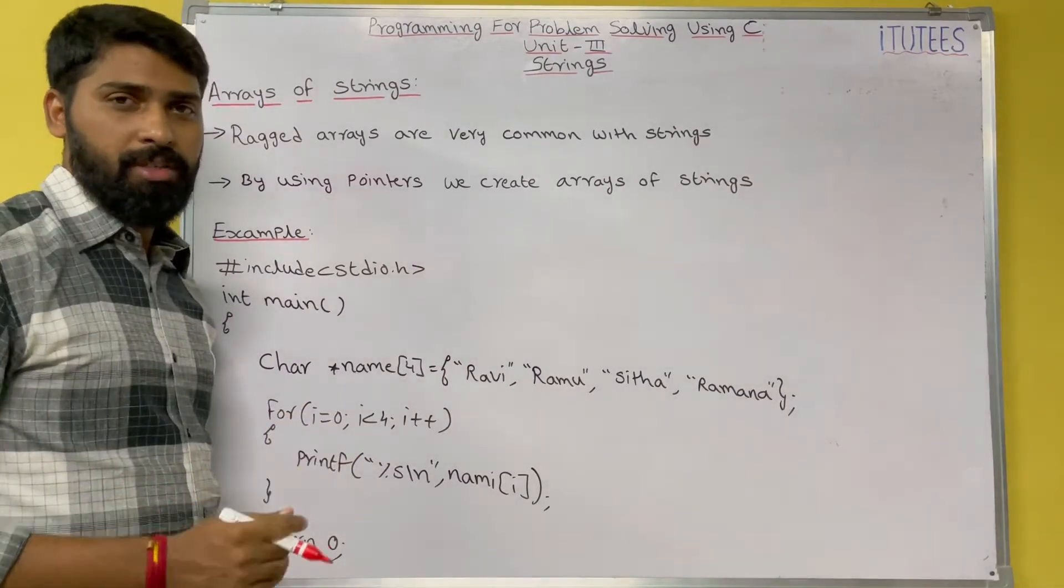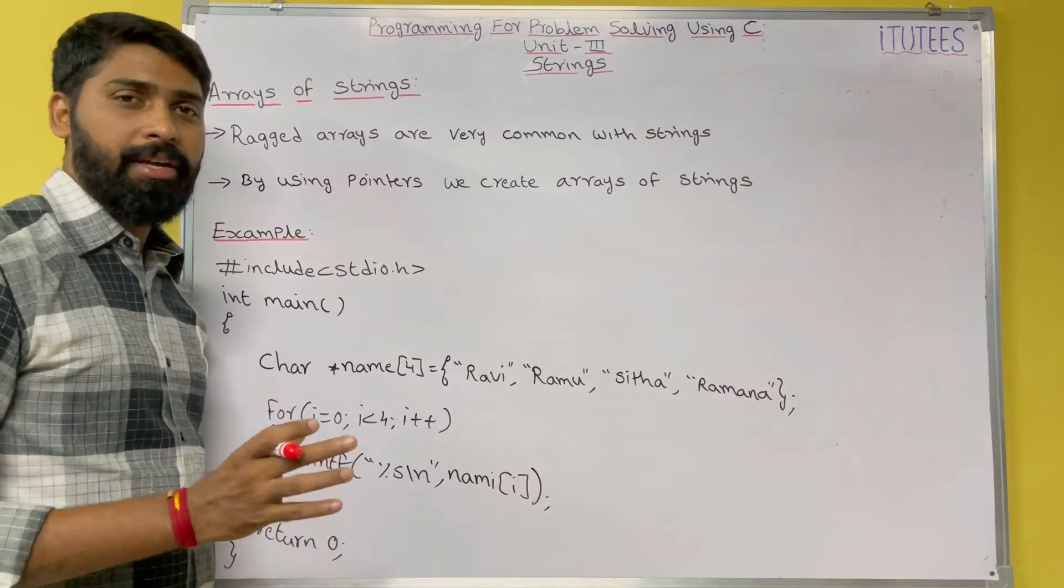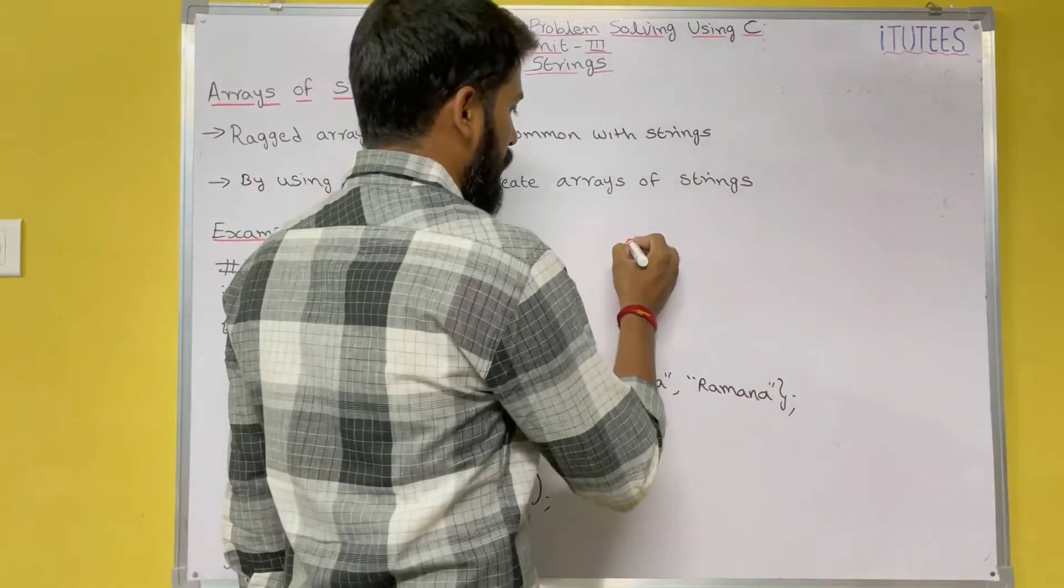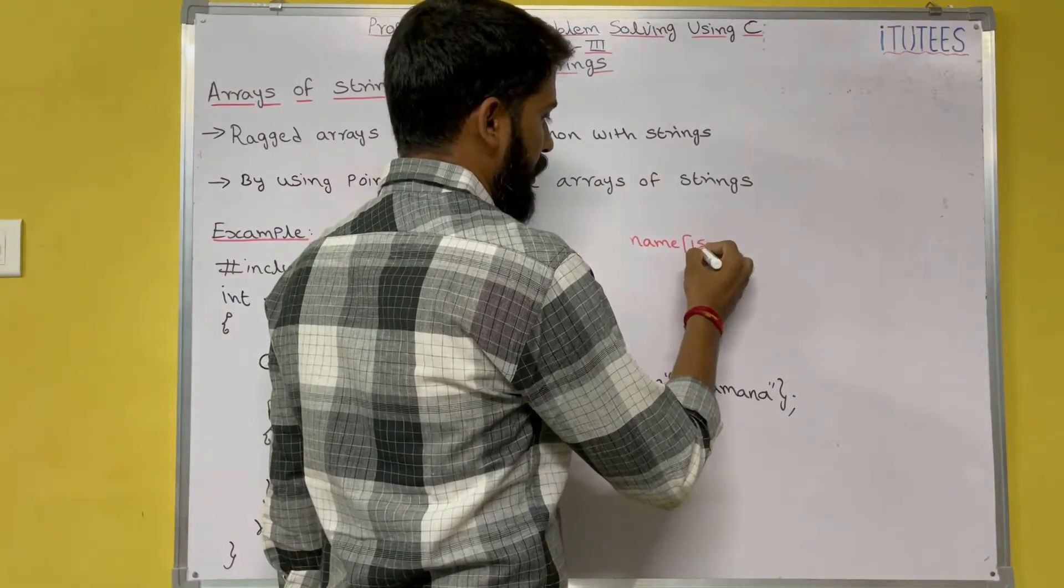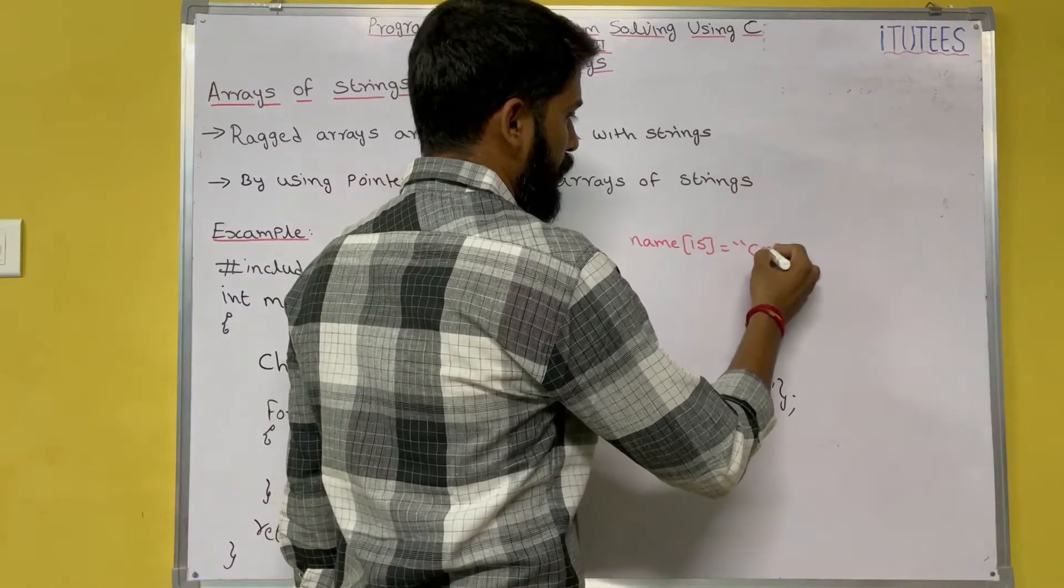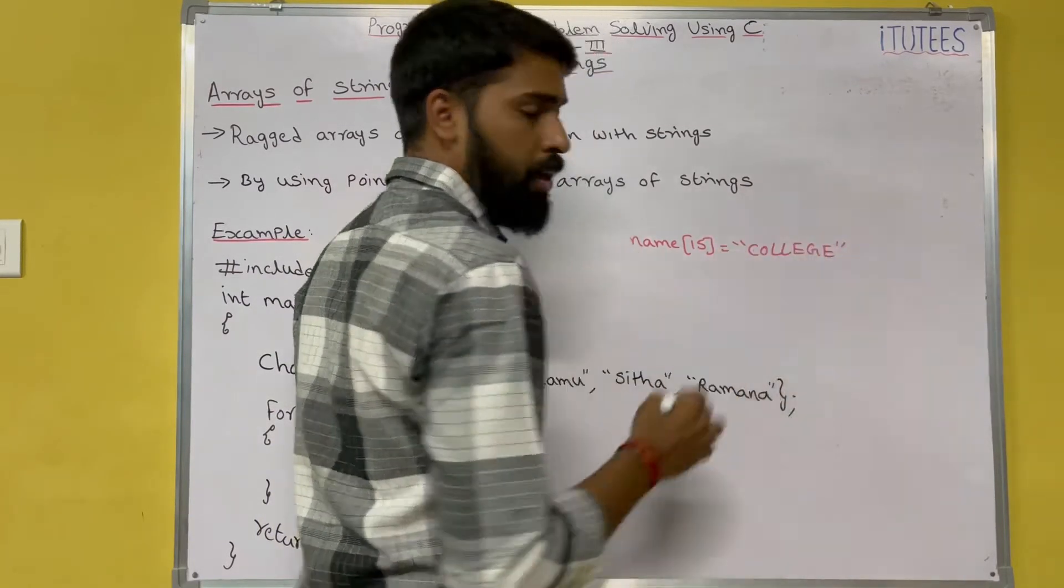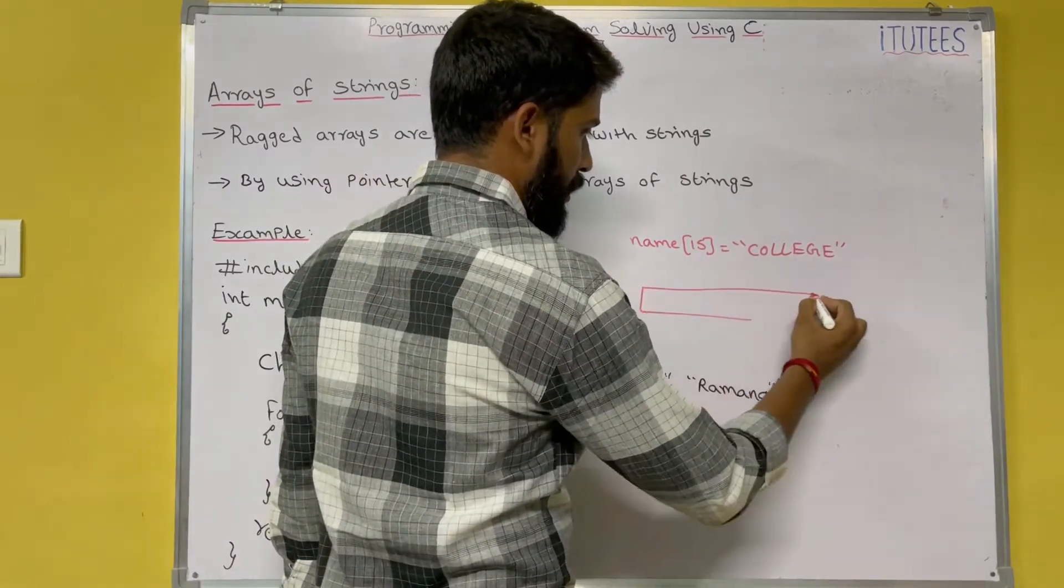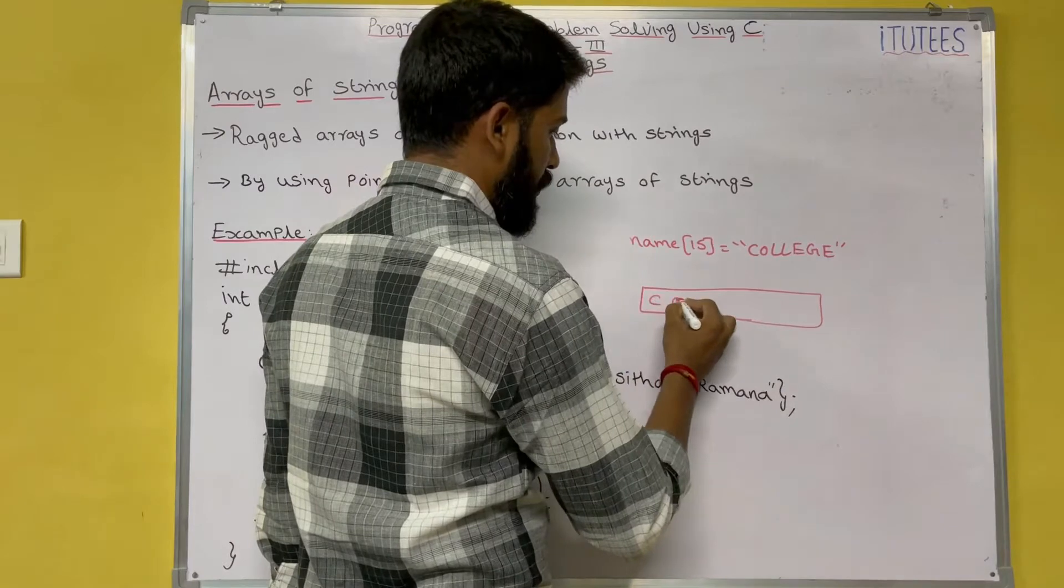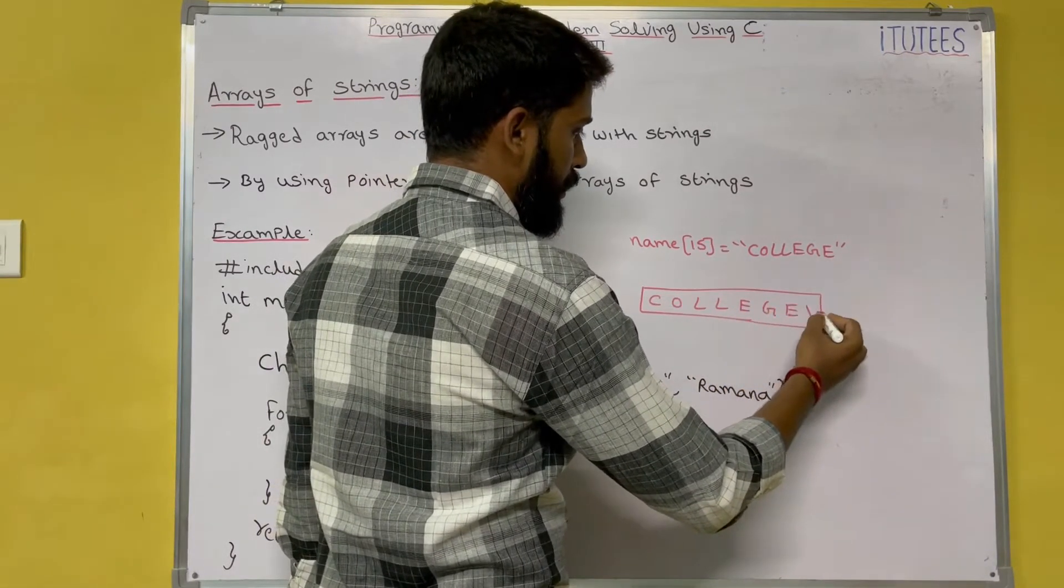So array of strings. What is a string? A string is a character array. That means name[15] equals "college". How it stores? It stores like this: c o l l e g e \0.